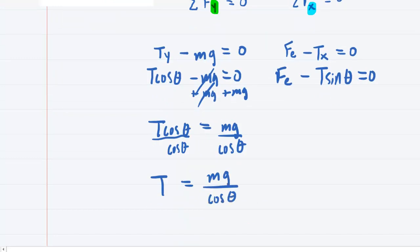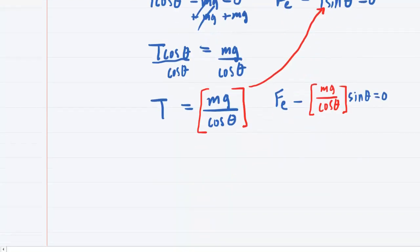The reason that that's nice is we can take this expression for the tension, and we can plug it in to our other equation that we had generated. So we would have Fe minus, let's be very careful here, so we're saying the tension is mg over cosine theta, and then that's multiplied by the sine of theta, and this is set equal to zero still.